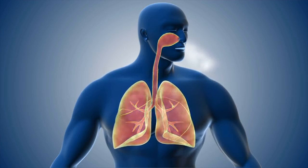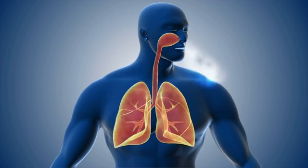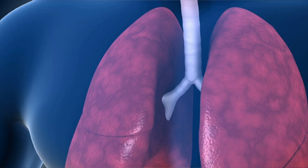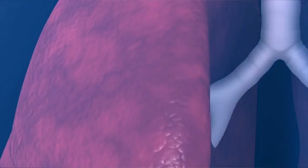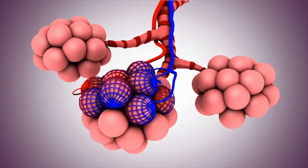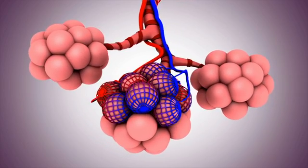But let's look at how the respiratory system is involved in this process. When we breathe in, the air comes in through the oral and/or the nasal cavities. The air then travels from these cavities through the trachea, which leads to the two bronchi. This then splits into smaller bronchioles and ultimately reaches the alveoli, which are the tiny little air sacs where the gas exchange actually happens.